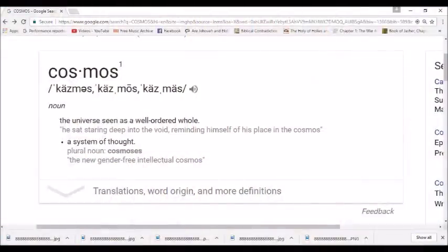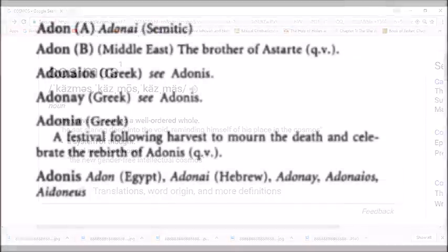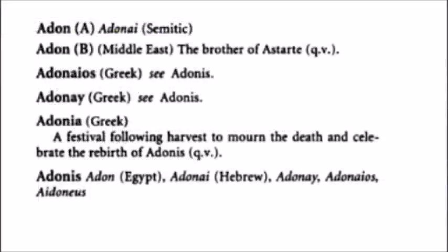Deuteronomy 32:8, as I say all the time, explains how the Most High divided up the nations into 70 and apportioned the gods over them, and Israel's lot fell to Jehovah — that's the way it reads in the Septuagint version. But here in Ezekiel, all the way through the book of Ezekiel, it calls him Adonai Yahweh. Adonai is the name of a Greek god who is also known in the Egyptian pantheon. So it appears then that the Jews didn't always just use the name Jehovah. We've been told a lot of fables, but they had kind of an ongoing revelation throughout the book of Genesis.